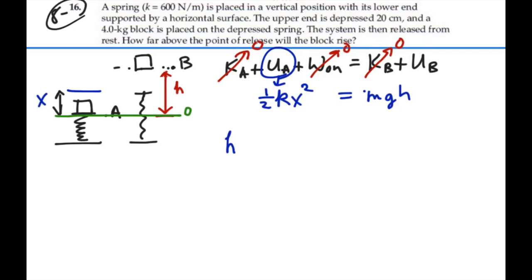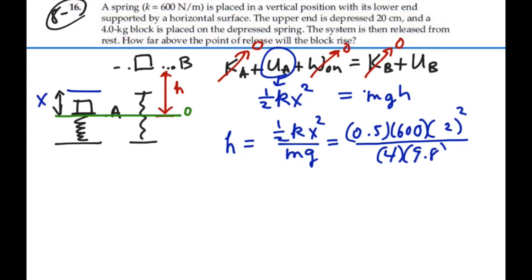Solving for h, one-half kx squared divided by mg equals h. That's going to be 0.5 times the spring constant, which was 600 newtons per meter. We compress the distance x of 20 centimeters, which is 0.2 meters squared, and that's over the mass 4 kilograms times 9.8, and that's equal to 0.306 meters.